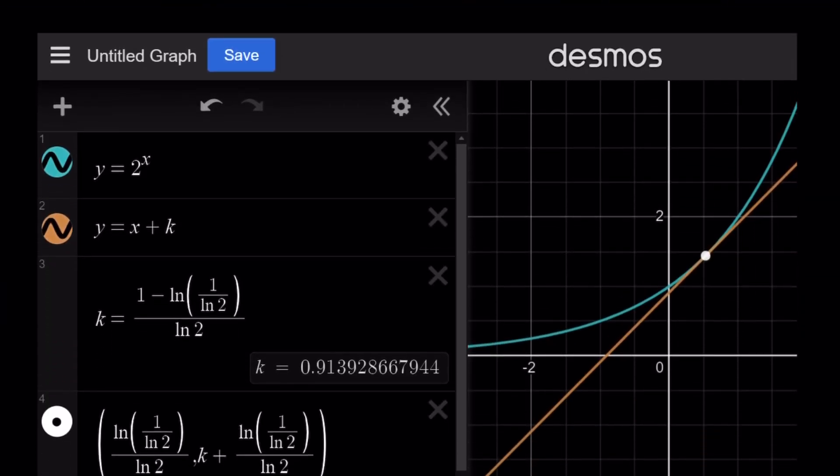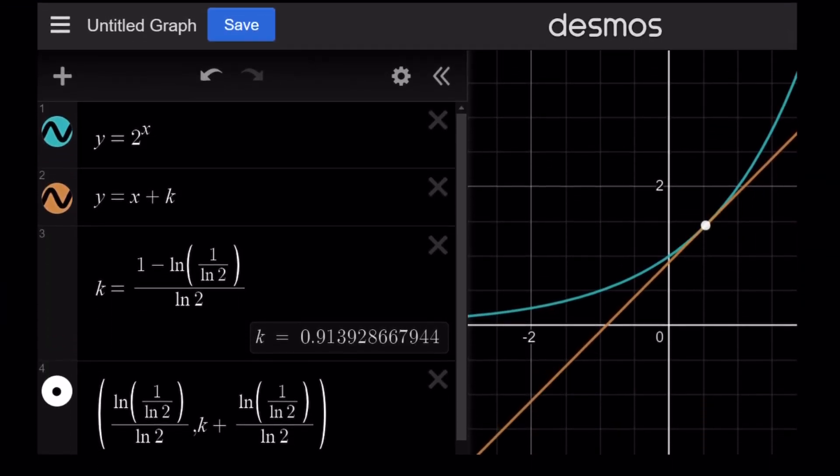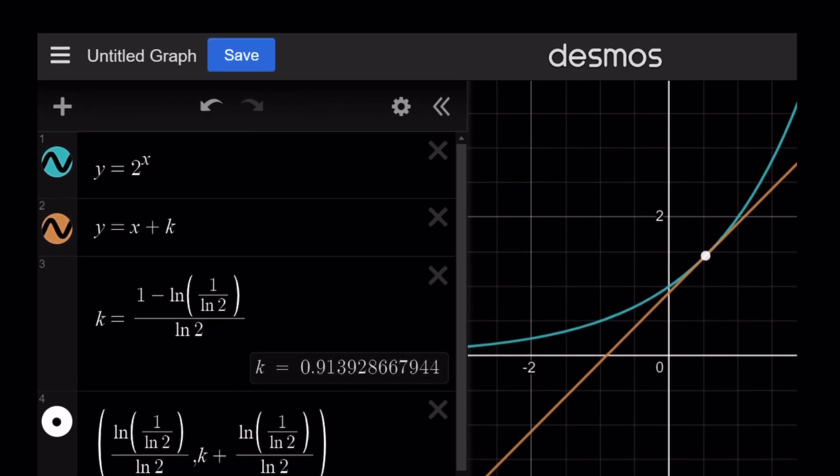And here's the graph. There you go. Okay, exactly the graph for the point of tangency. As you can see here, it's the exact same value that we found. It's about 0.913928667944, so on and so forth.